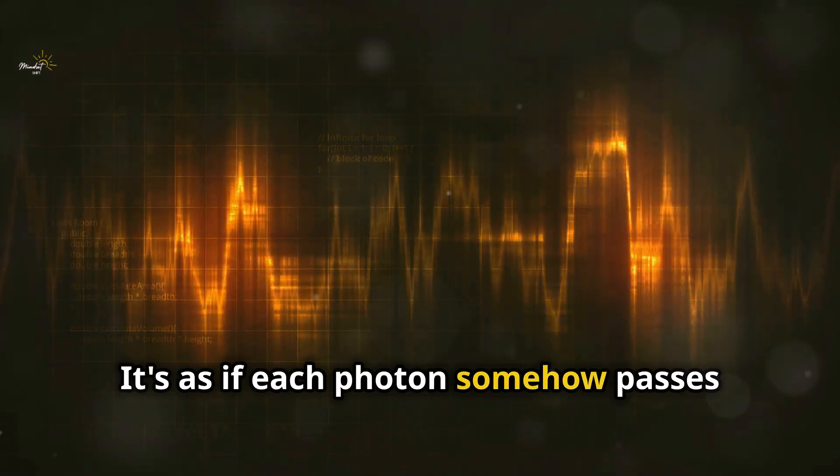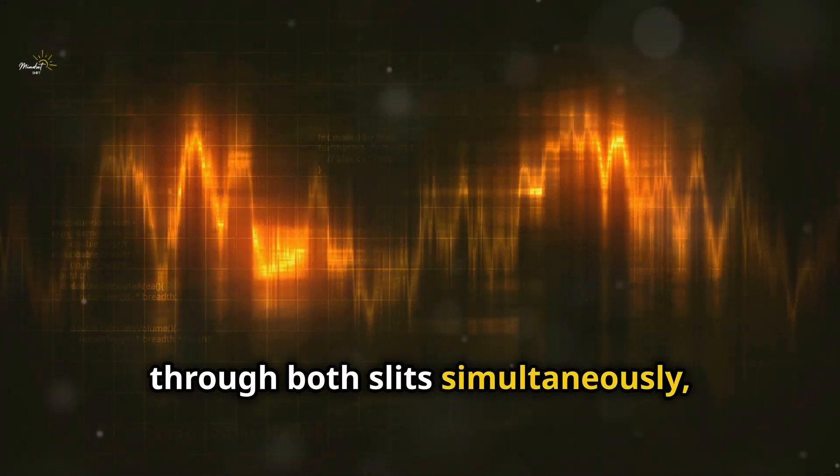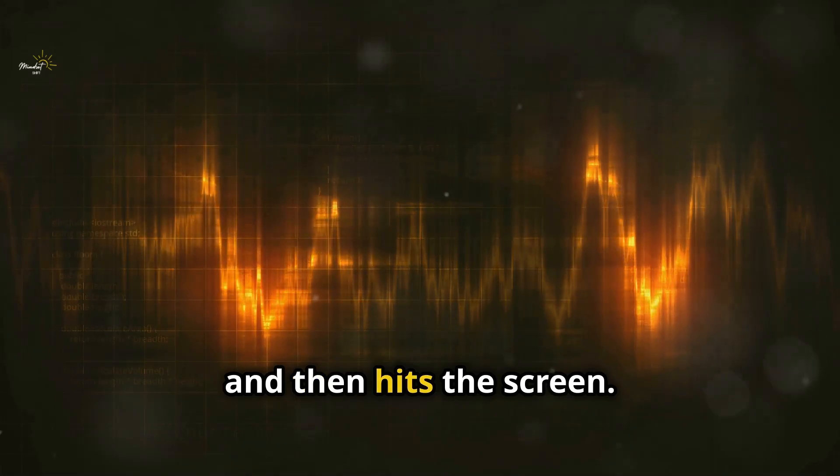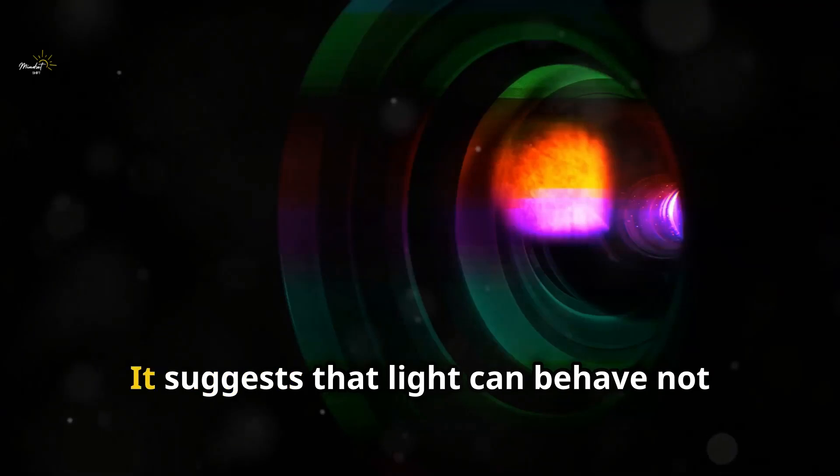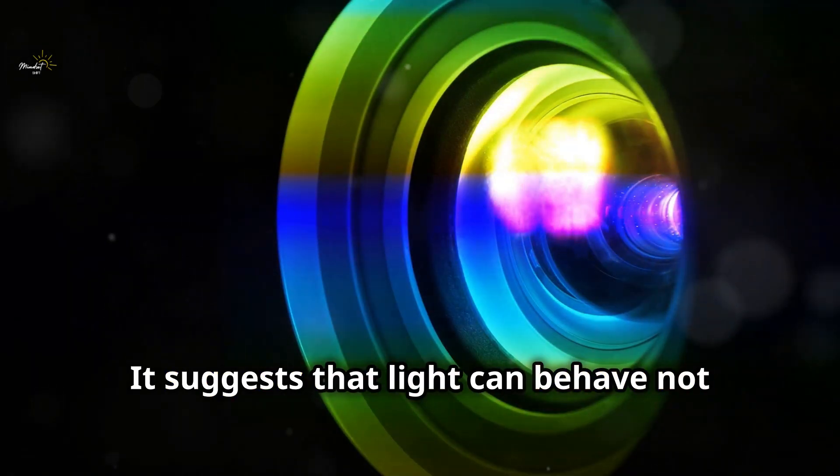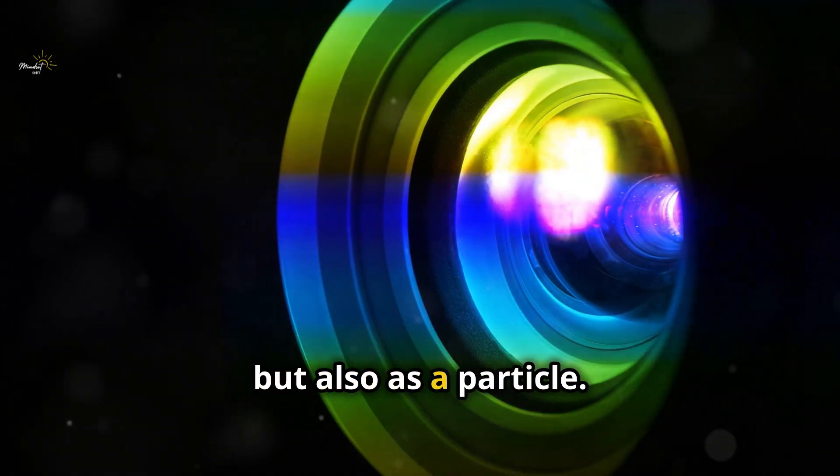It's as if each photon somehow passes through both slits simultaneously, interferes with itself, and then hits the screen. This finding throws a wrench into our classical understanding of light. It suggests that light can behave not just as a wave, but also as a particle.